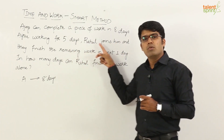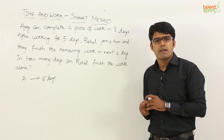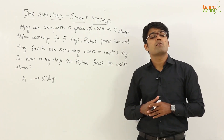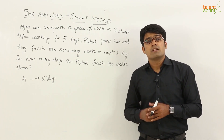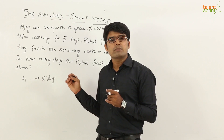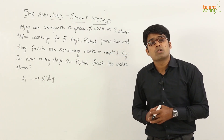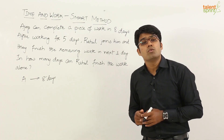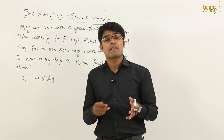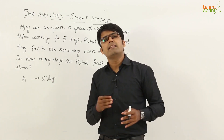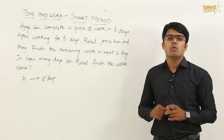After five days, Rahul joins, and Ajay and Rahul together finish the remaining work in the next one day. We need to find out the number of days required by Rahul to finish the work if he is working alone. The traditional method is to frame the work equation based on the concept of work being equal to men multiplied by number of days, find Rahul's capacity, and get his days.